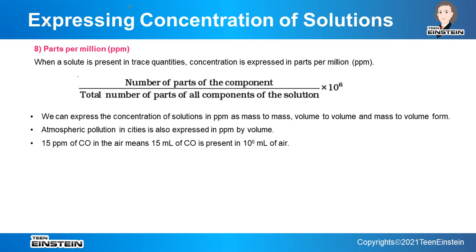Parts per million, or PPM, is another way to express the concentration of a solution. This type is used when the solute concentration is very low — that is, it is present in trace quantities. From the name itself, you can understand that out of one million, there will be only one part of the solute.